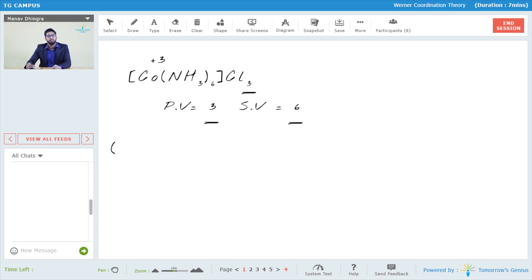Now we'll do another interesting example: [Co(NH3)5Cl]Cl2. Now you'll be thinking that the primary valency should be 2 and the secondary valency should be 6, which is completely wrong. That's the misconception we'll be studying in TG Campus.